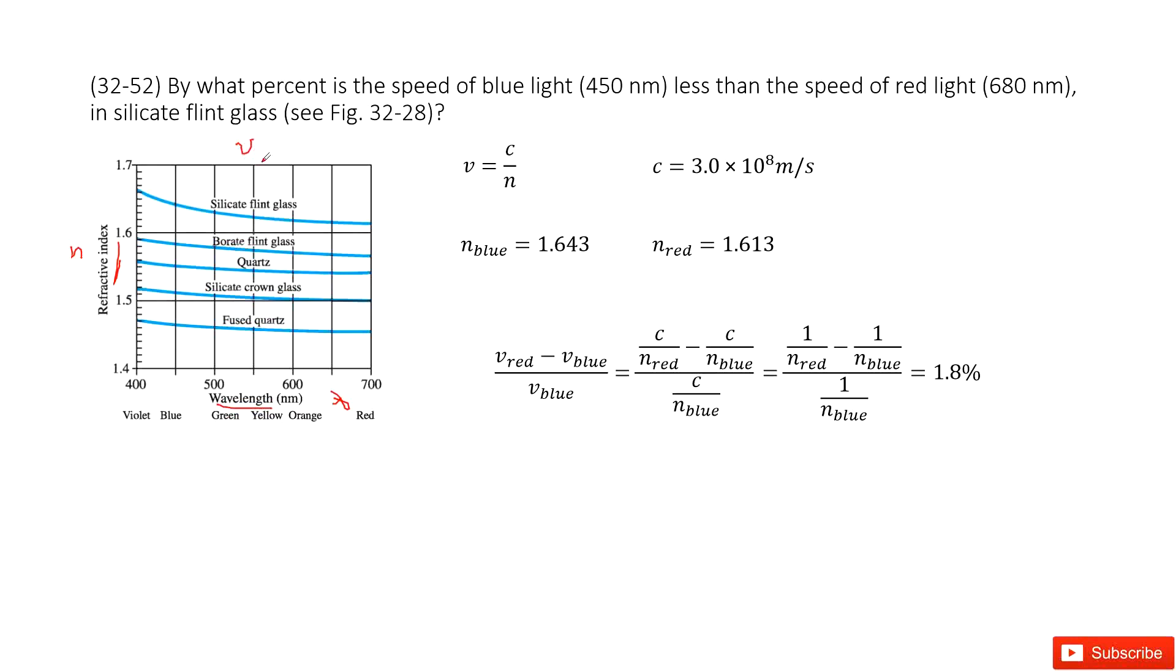And then, one thing is very easy. We know the relationship between v and n. So v is c over n. This is the speed of light. It depends on c, the speed of light in space. And n is the refractive index.